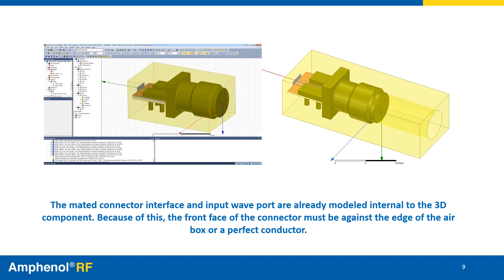The mated connector interface is modeled within the component. The import wave port is embedded within the 3D component at the interface. The face of the connector must be against the edge of an airbox or a perfect conductor.